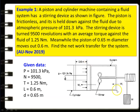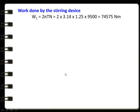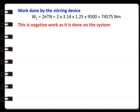There are two types of work here: work given by the stirring system, and work produced by the reciprocating piston. The work done by the stirring device is W1 = 2πNT. So 2 × 3.14 × 1.25 × 9500 = 74,575 Nm. This work is negative, as it is done on the system — the stirring work is done on the system, so it is negative.